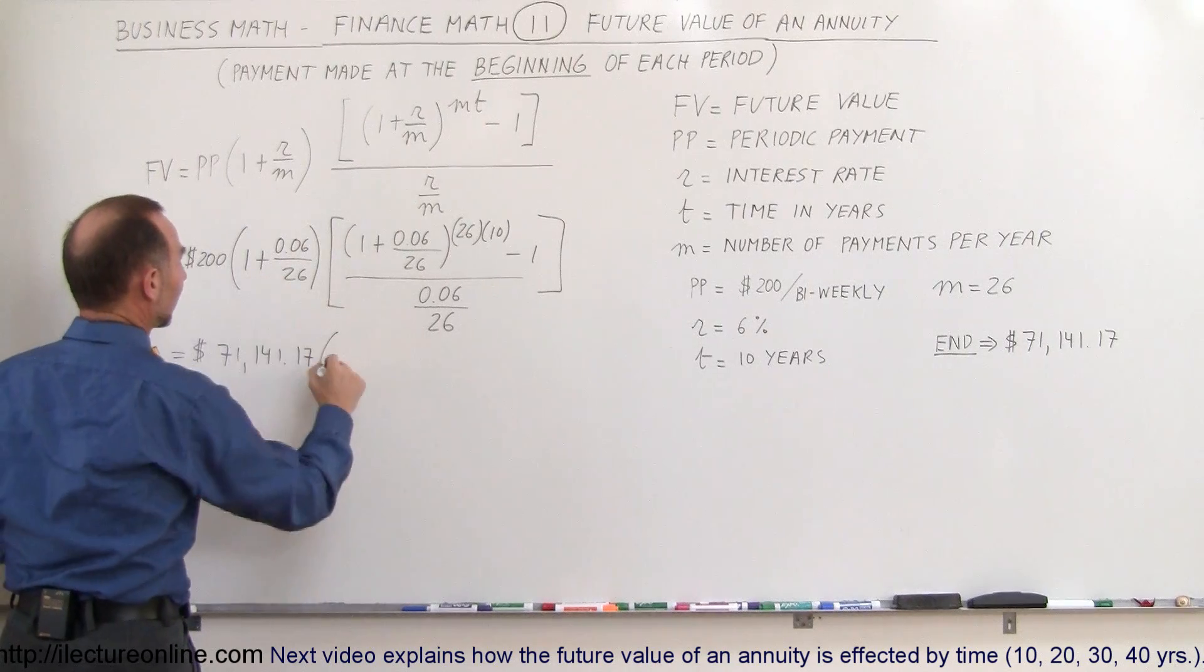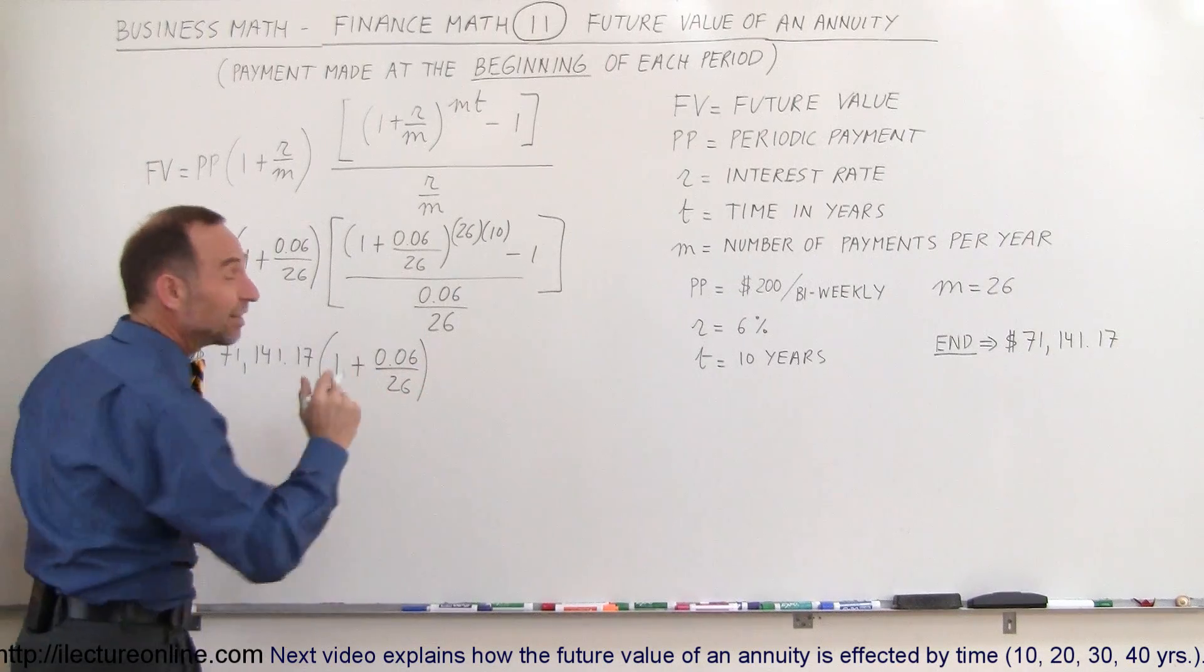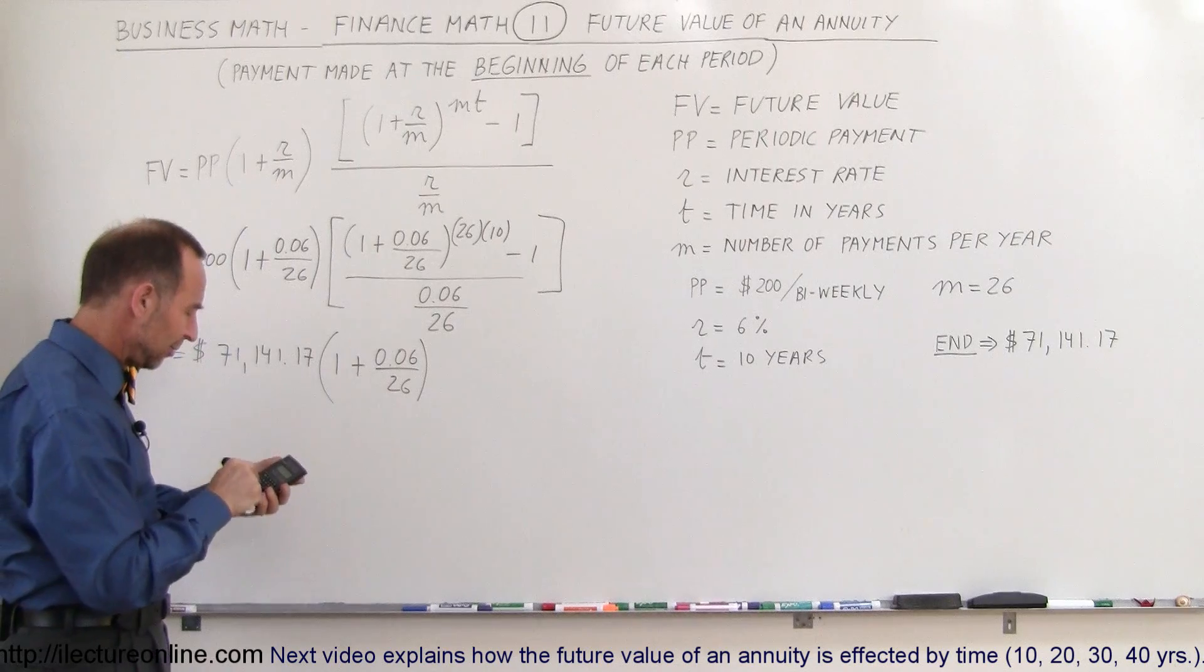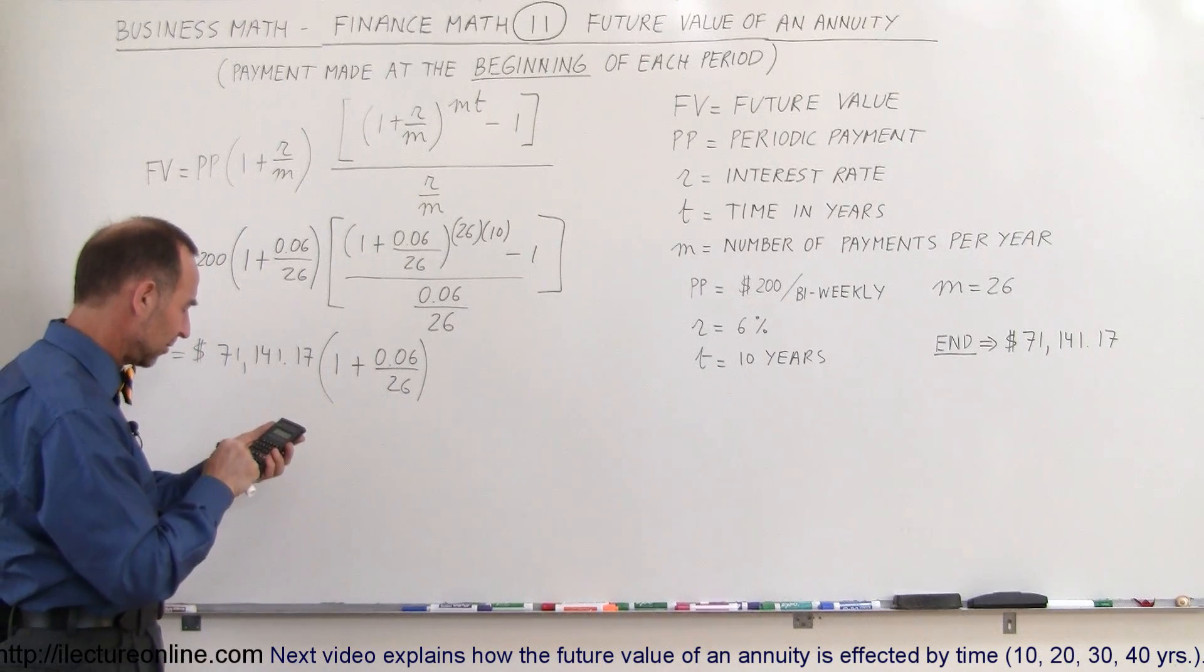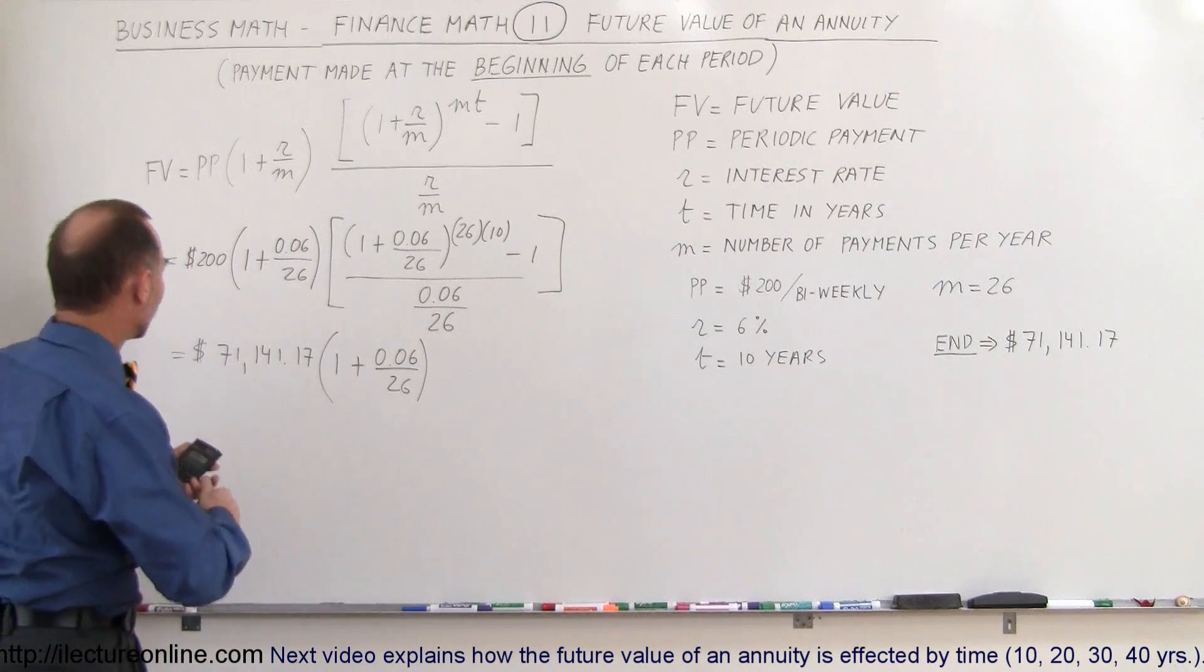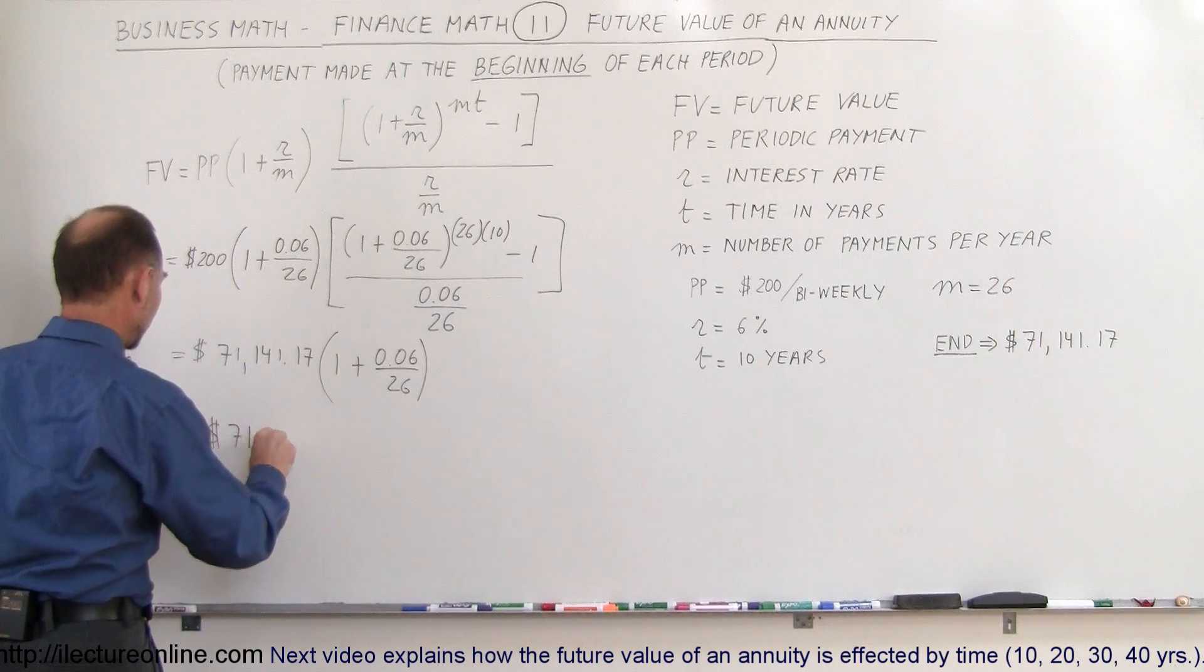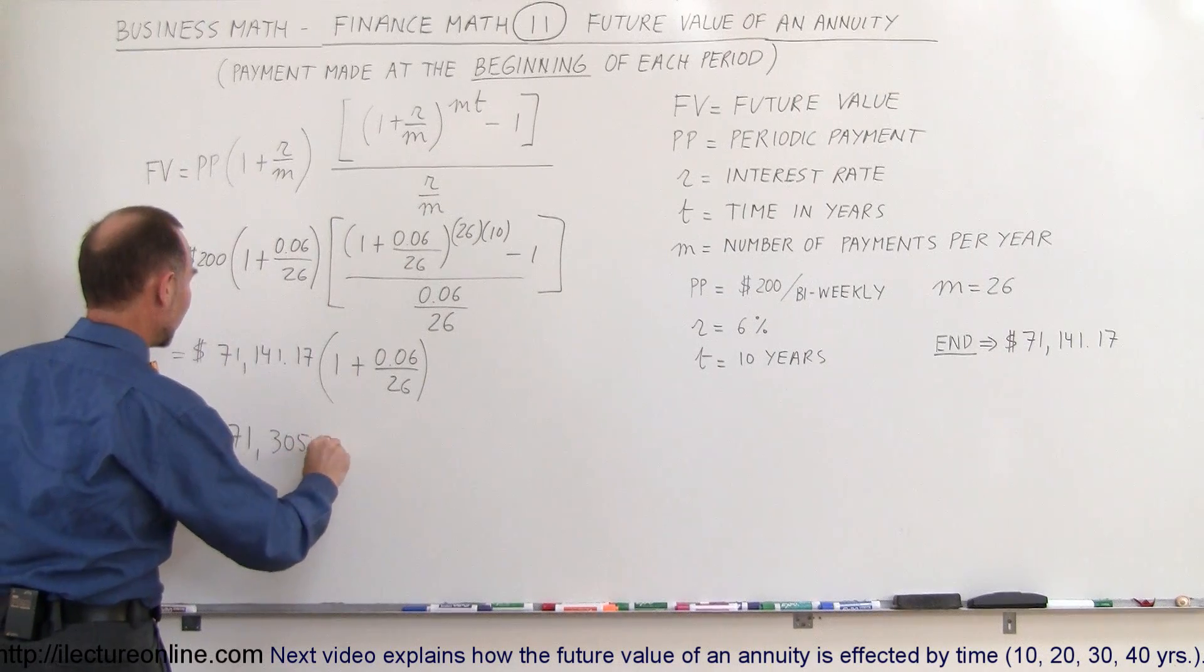Now we multiply that times 1 plus 0.06 divided by 26 because that's the only difference between the two equations. So we multiply times, we go 0.06 divided by 26 plus 1, close parentheses, equals, and so now the amount becomes $71,305.35.